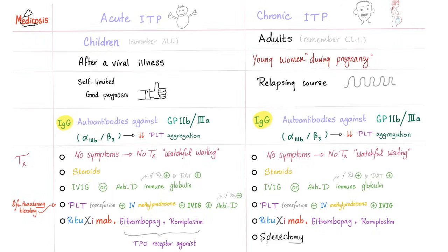Both acute and chronic ITP have IgG antibodies against GP2B3A, interfering with platelet aggregation. Treatment: no symptoms, no treatment; steroids; IVIG; or anti-D immune globulins if the child is Rh-positive and DAT-positive (positive Coombs test). For life-threatening bleeding: platelet transfusion plus IV methylprednisolone plus IVIG plus anti-D. Other options include rituximab, Eltrombopag, and Romiplostim. Splenectomy should be an option for chronic ITP in adults. We try to preserve the spleen in children since it is a major immune organ, but if ITP is really bad, splenectomy can be considered — though it is usually self-limited.